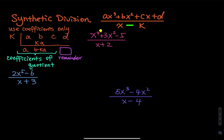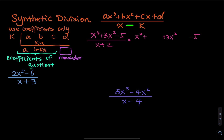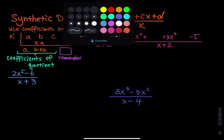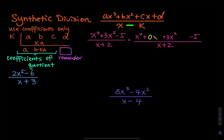For the dividend, you have the fourth power; the third power is missing; you have the square; the first power is missing; and then you have a negative five. So when you write this, you have to prepare x to the fourth — the third power is missing — then the second power, the first power is missing, and then minus five. This is divided by the binomial x plus two.